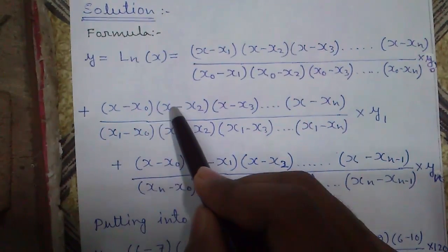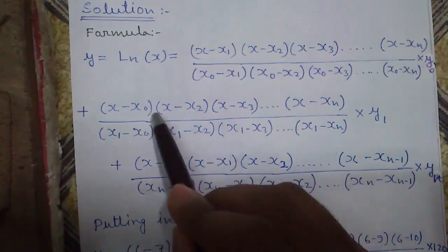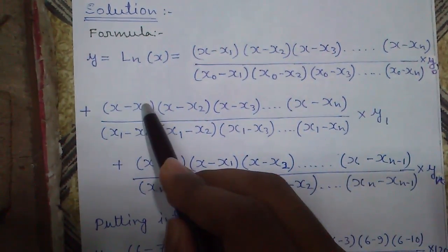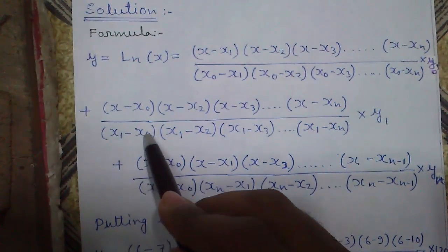That means x0, x minus x0 times x minus x1. You can see x1 is missing, there's x0 then x2, x1 is missing, then x3, x4 and so on. So since x1 is missing, we will start with x1.